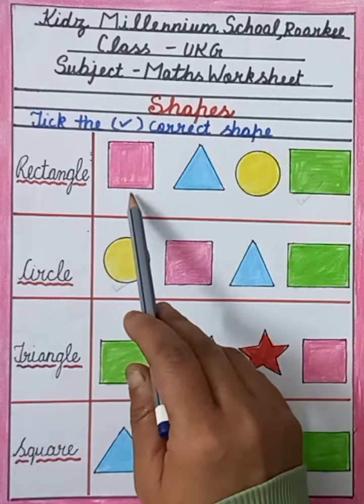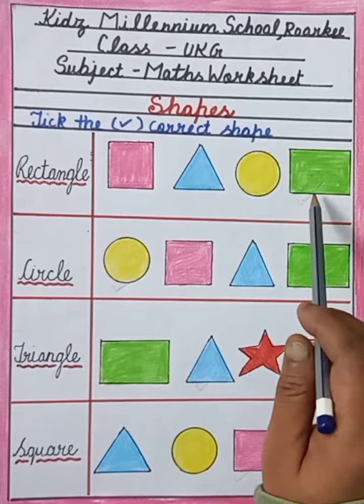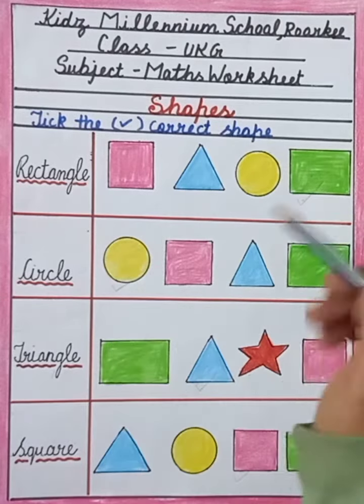You can see here is square, triangle, circle, rectangle. This is rectangle, so we will tick the rectangle.